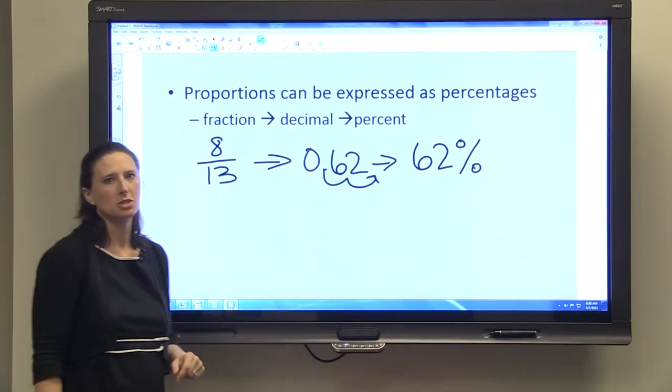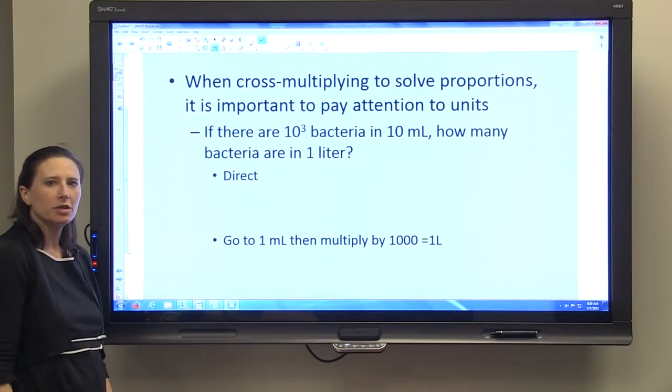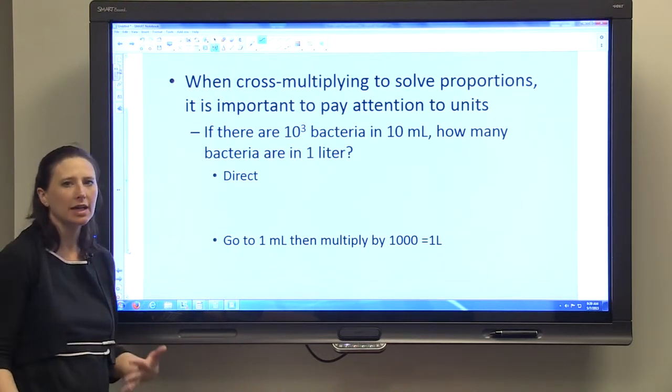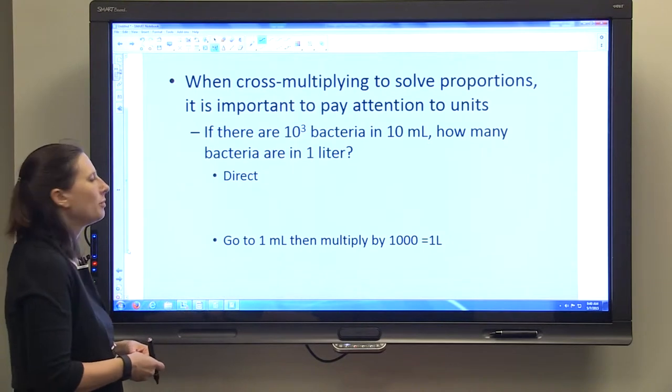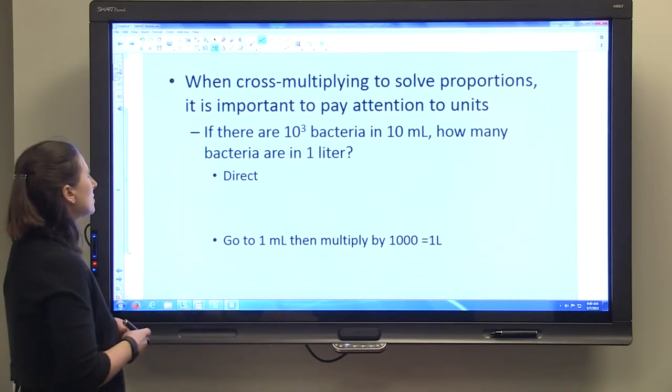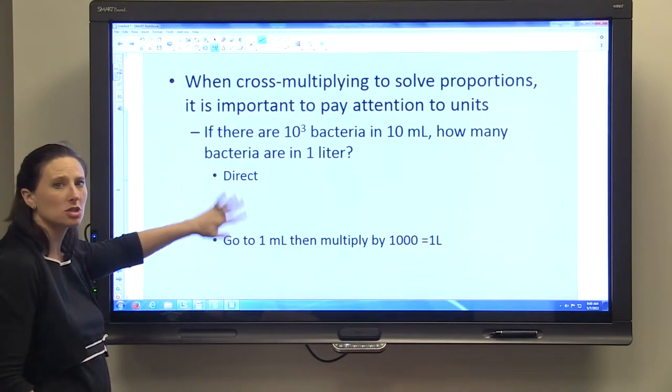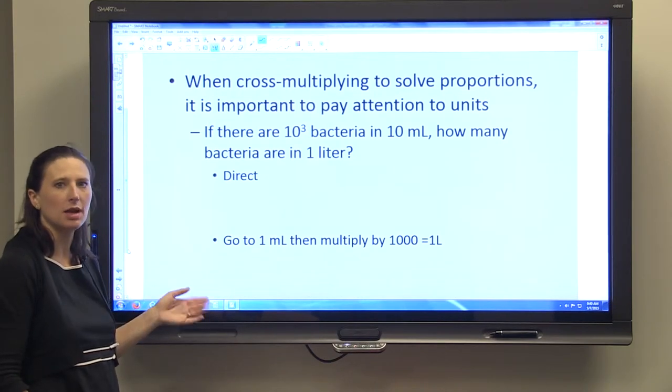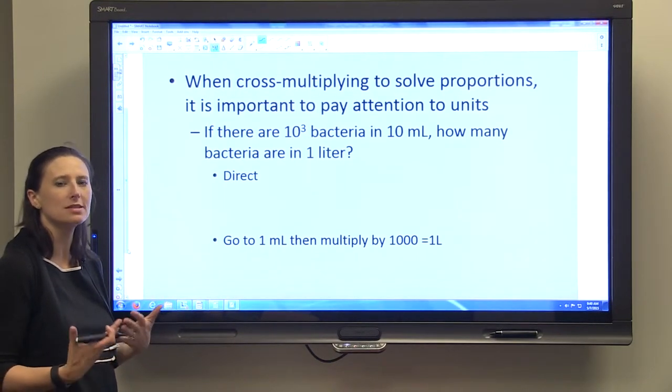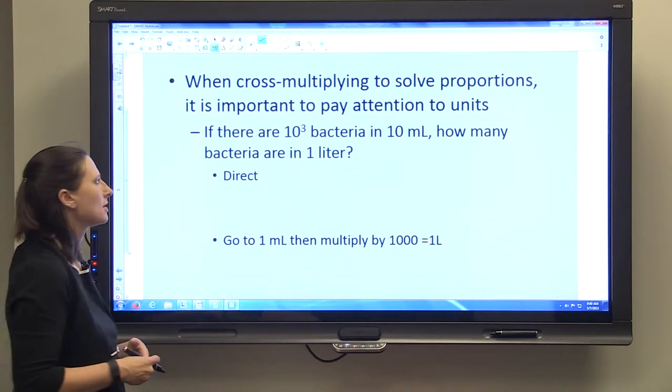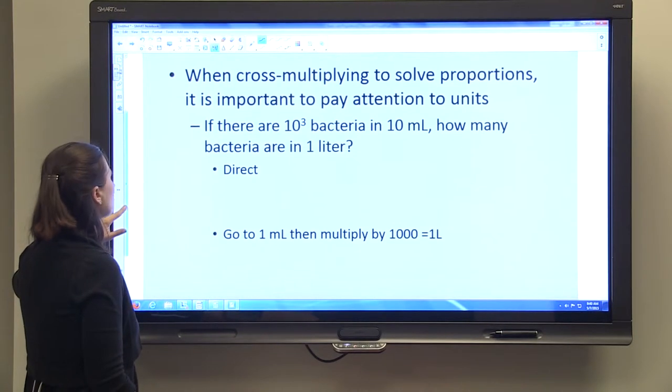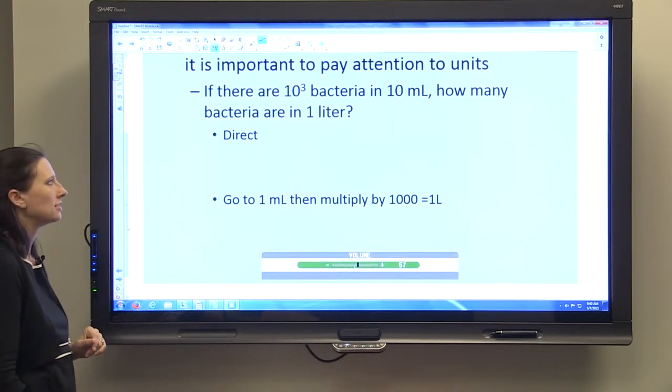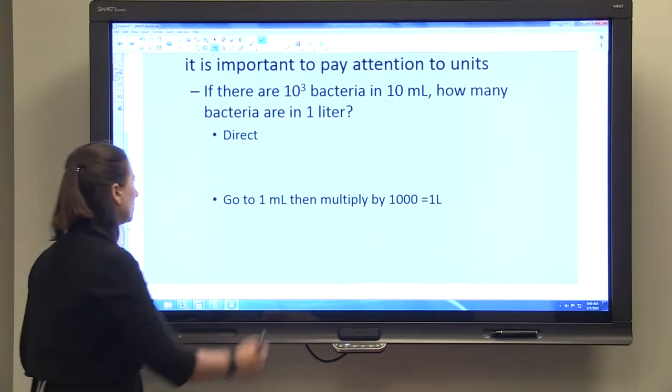When you're cross-multiplying to solve proportions, it can really help you to pay attention to the units. It's always very important to pay attention to units so that you get the correct answer, but it can also help you move through the problem. We're going to work to solve this question in two different ways - both are correct. You'll see that we get the same answer using both. Our question is: if there are 10³ bacteria in 10 mL, how many bacteria are in 1 liter?